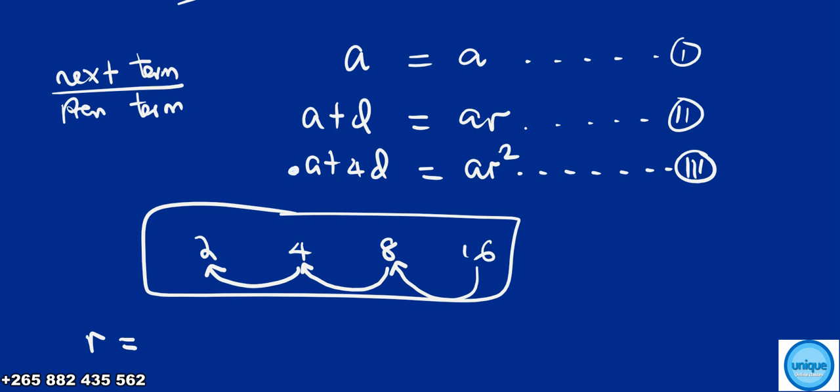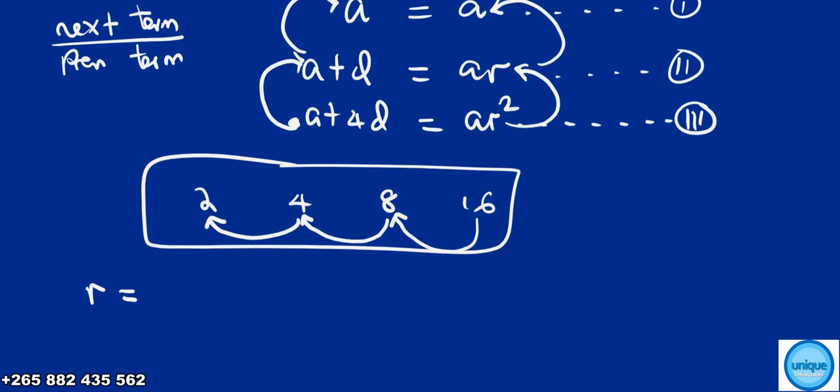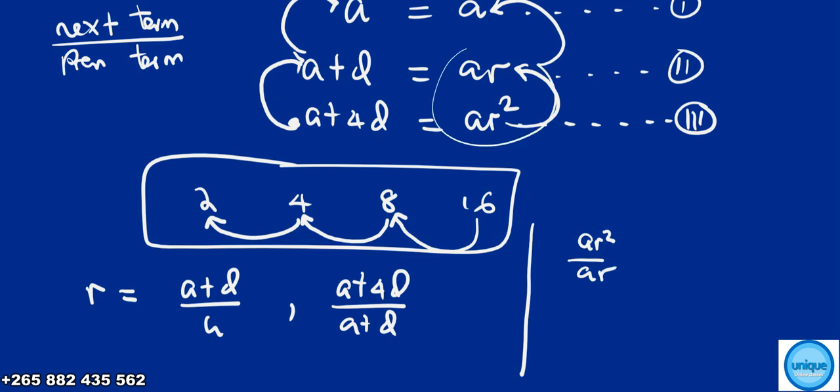So r equals the next term divided by the previous term. We can write r as (a plus d) over a, or (a plus 4d) over (a plus d). On the GP side, r equals ar over a, or ar squared over ar.